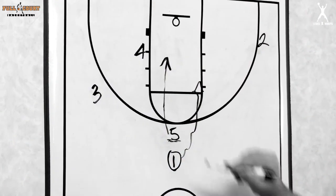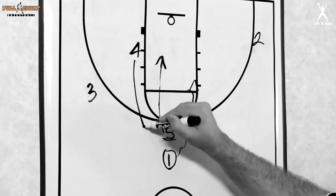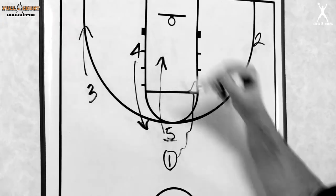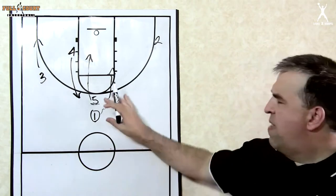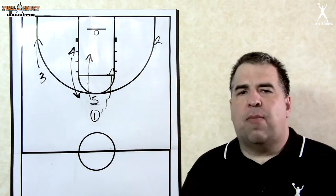Remember that anytime a post player rolls, the opposite post should replace. So four comes to the top, three slides to the corner. And again, you've got several options to choose once one has the ball and comes off and looks to attack the basket.